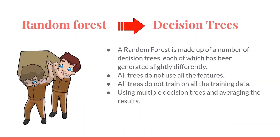A Random Forest is made up of a number of decision trees, each generated slightly differently. Not all decision trees use all available features, and they don't all train on all of the training data. We use multiple decision trees and then average out the results, and this averaging is how we achieve our Random Forest.